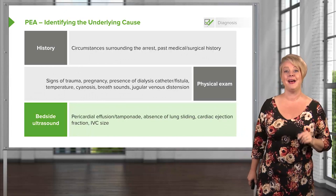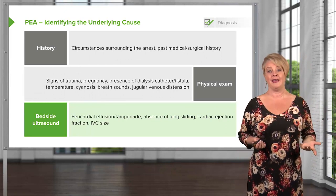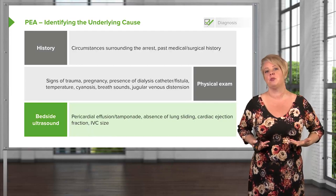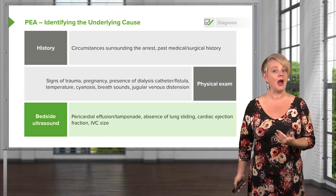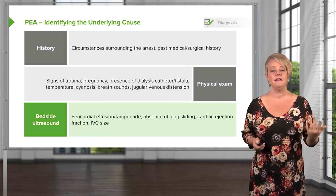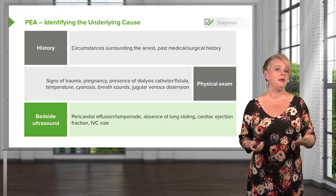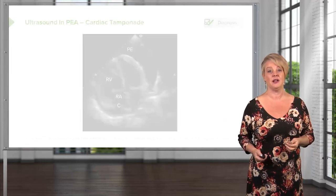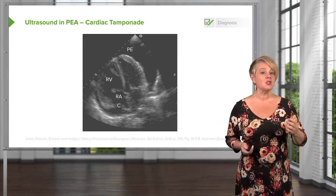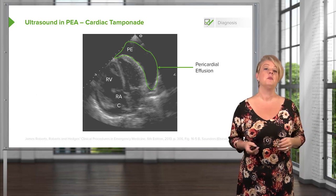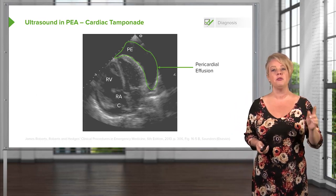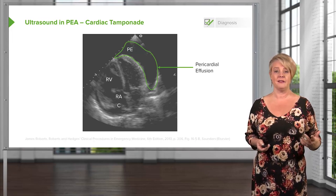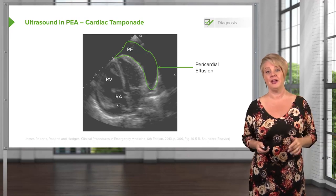Another great adjunct is bedside ultrasound — a great extension of physical exam that lets us look inside the body in real time. We can identify: is there a pericardial effusion or signs of tamponade? Is there a pneumothorax, seen by absence of lung sliding? Is there an abnormal cardiac ejection fraction — maybe the heart is barely beating? Is the IVC distended, suggesting volume overload, or collapsible and tiny, suggesting dehydration? This cardiac ultrasound image shows chambers labeled and, most importantly, a large pericardial effusion — large enough that you'd want to perform a pericardiocentesis to improve cardiac output.